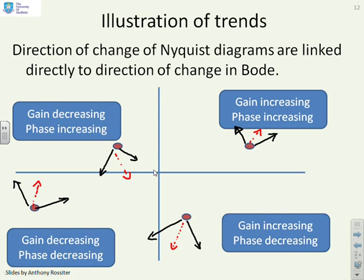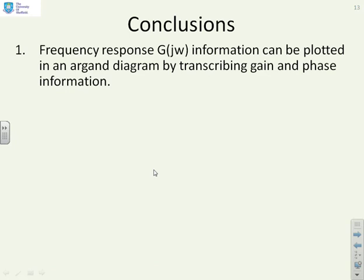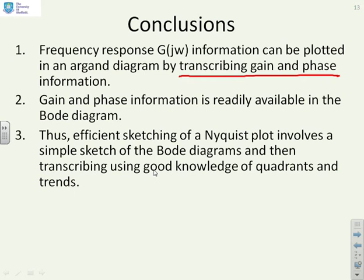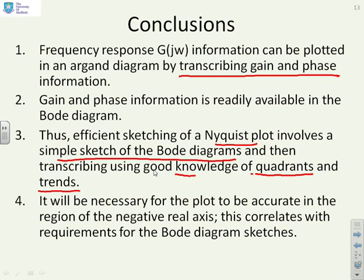The conclusions: frequency response information can be plotted in an Argand diagram by simply transcribing gain and phase information. The gain and phase information is readily available in the Bode diagram, which you've probably done first. An efficient Nyquist sketch involves first a simple Bode diagram sketch, then transcribing it using knowledge of quadrants and trends — if the phase is increasing it goes anticlockwise, and so on. It might be necessary for the plot to be accurate in the region of the negative real axis, and you may need a couple of specific points to hang your Nyquist diagram on.